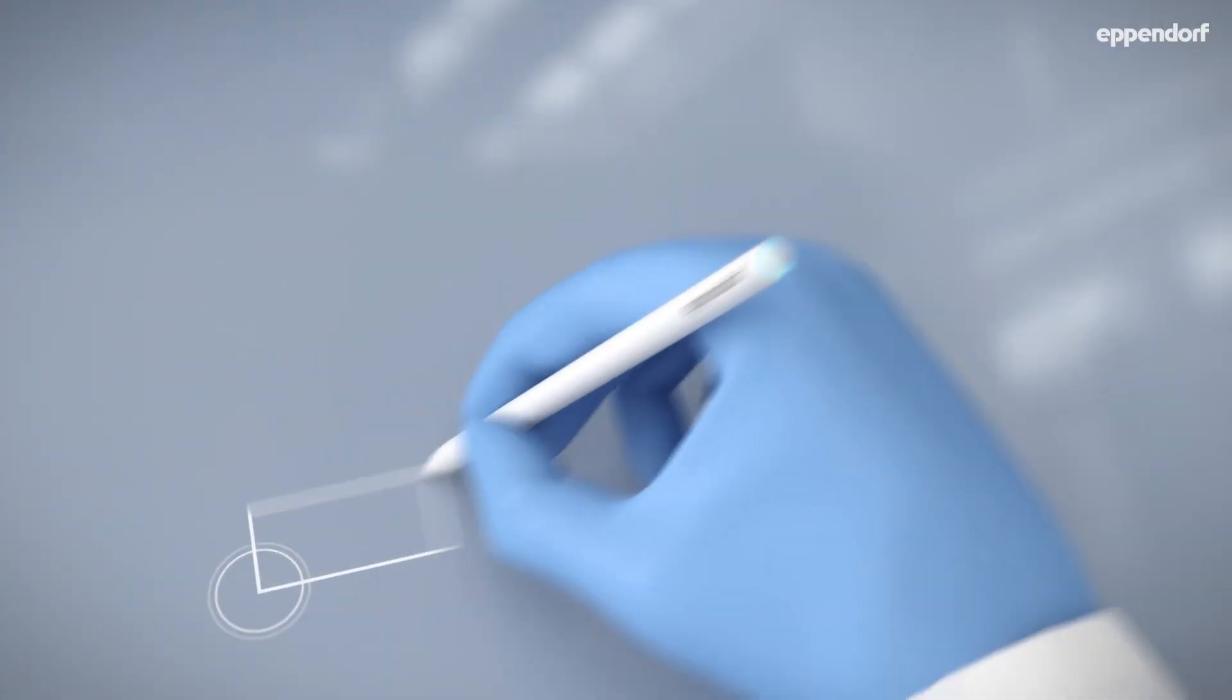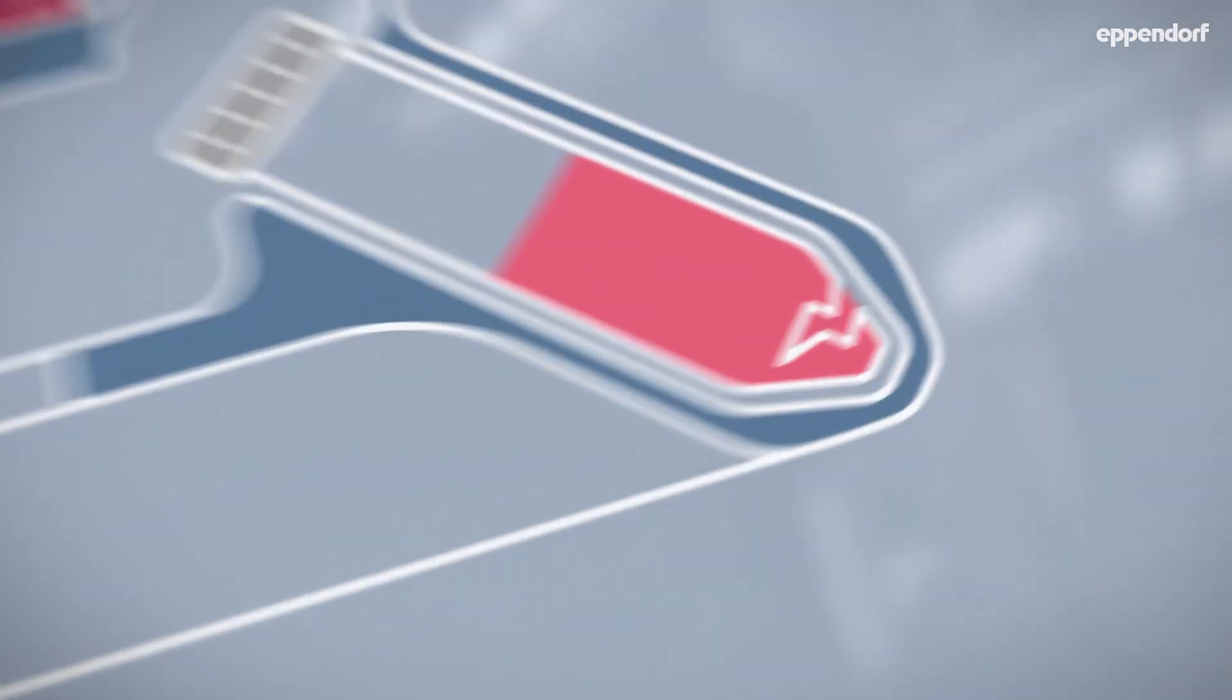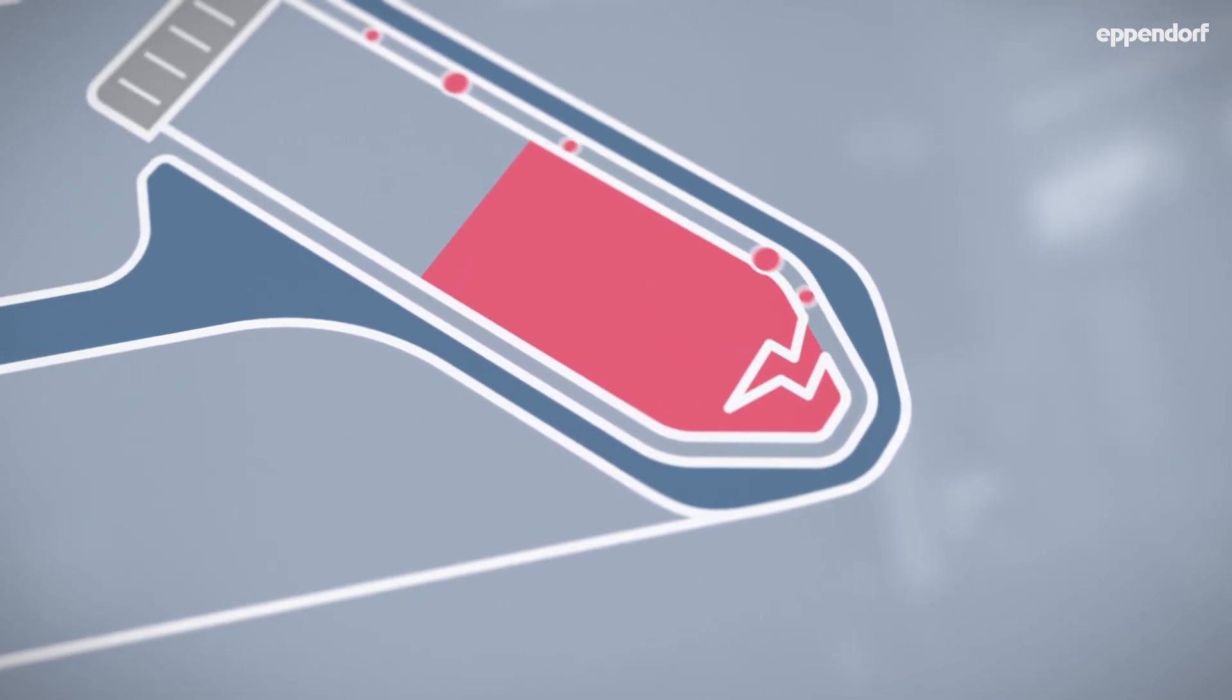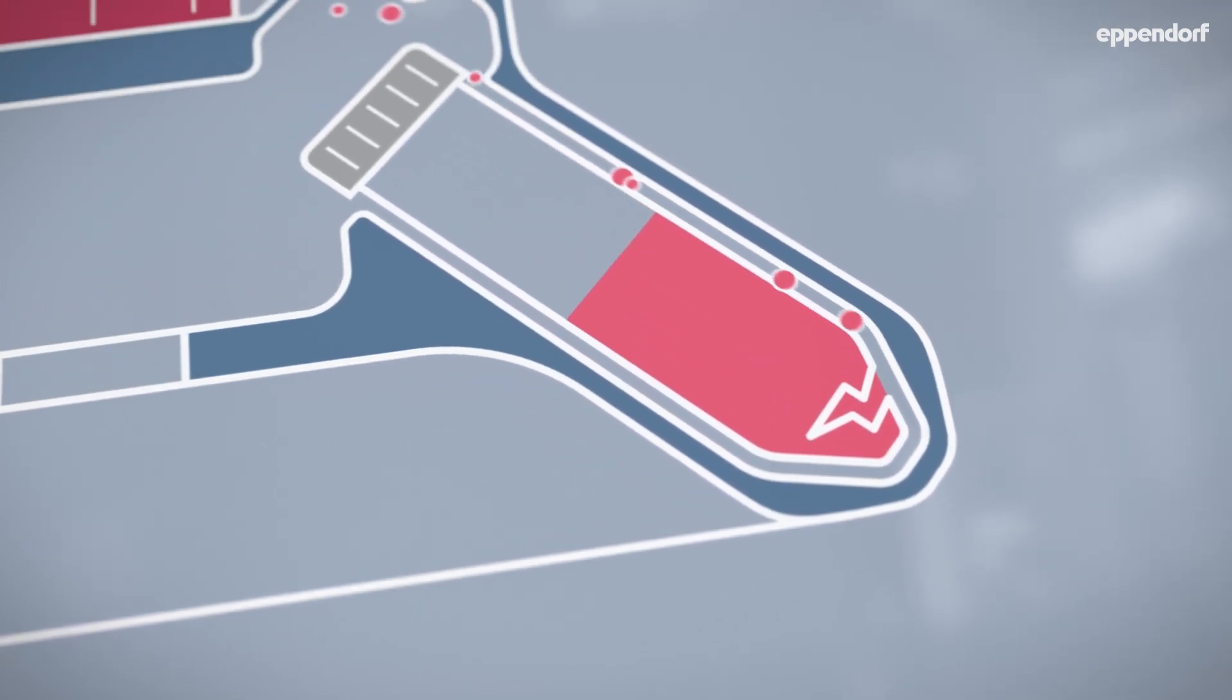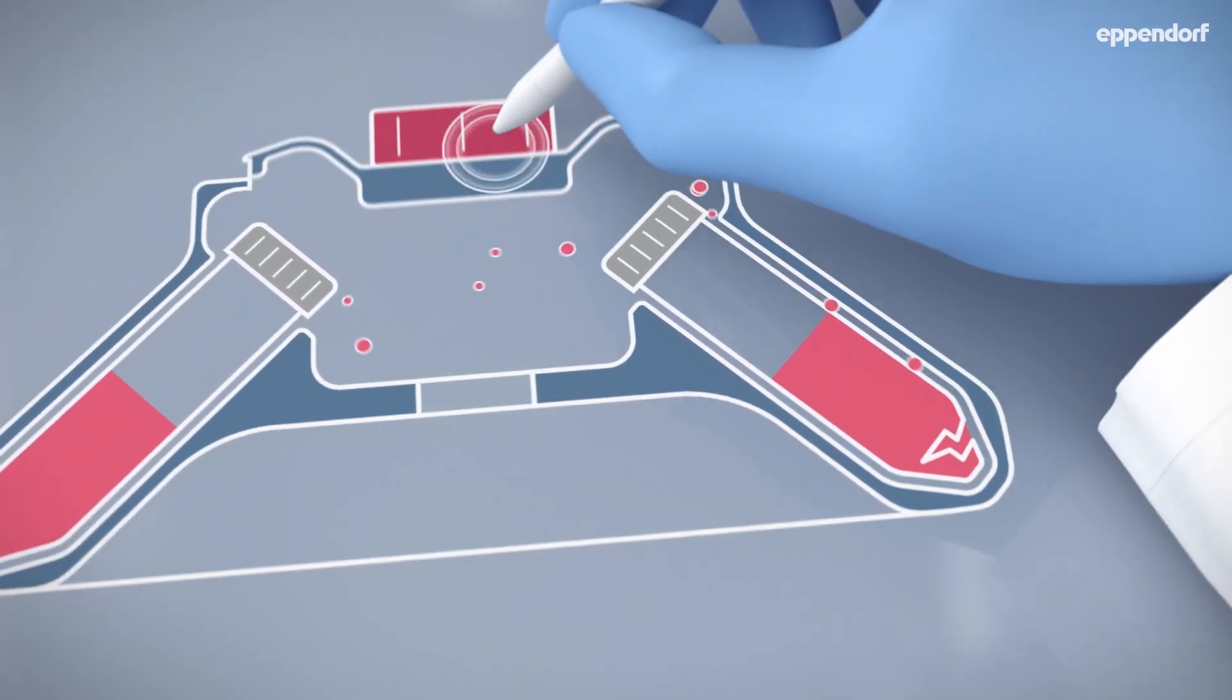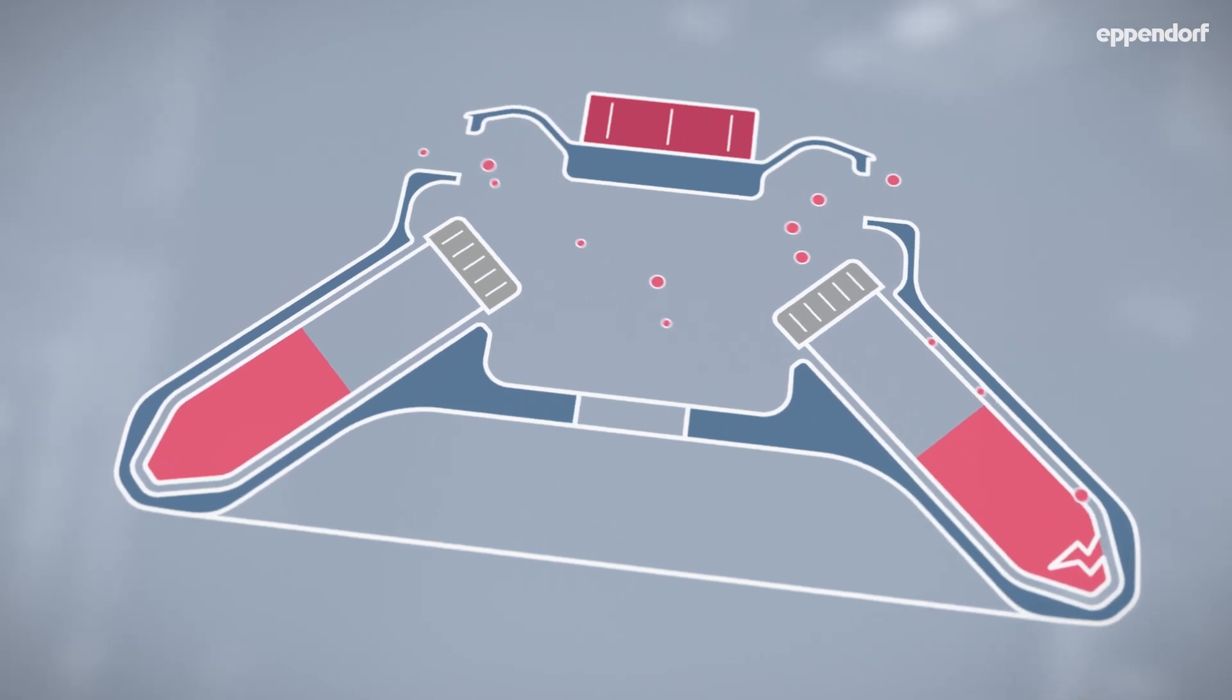Centrifugation can be one source of aerosols in a laboratory environment. If a tube breaks during the run, liquid can be released from the tube, leading to the generation of aerosols inside the rotor. Without an aerosol-tight lid, the aerosols would be released into the centrifuge chamber and from there into the lab immediately.